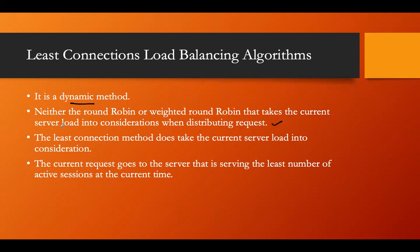Since round robin and weighted round robin do not take current server load into consideration, the least connections method does. It takes the current server load into account, and the incoming request goes to the server that is serving the least number of active sessions at the current time.